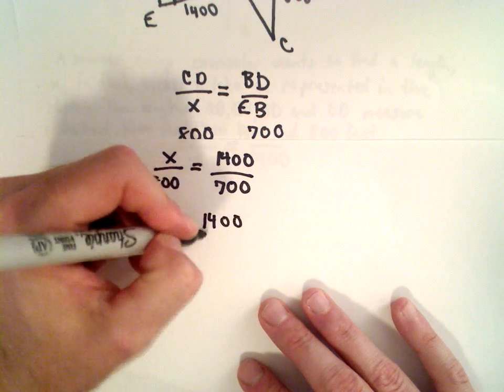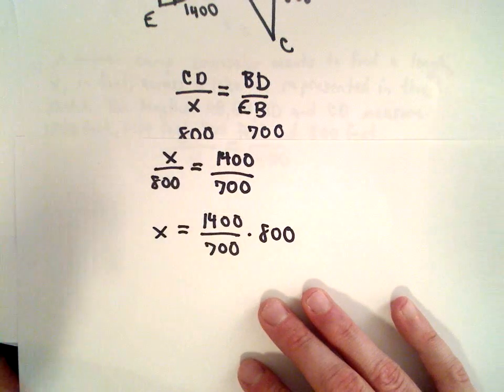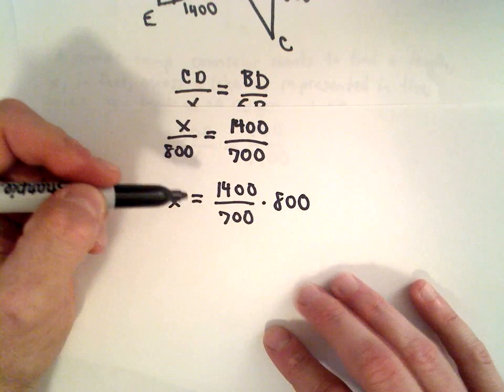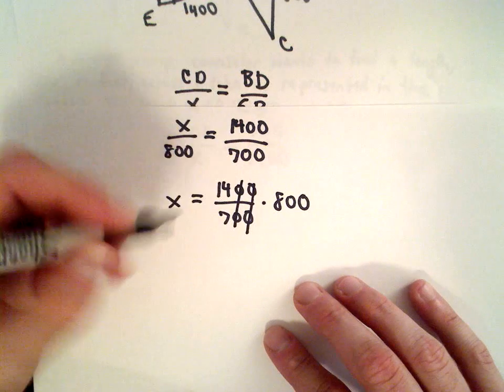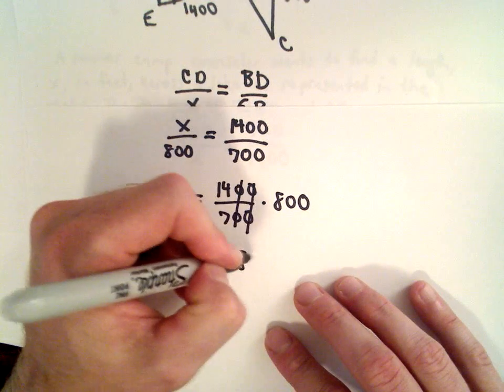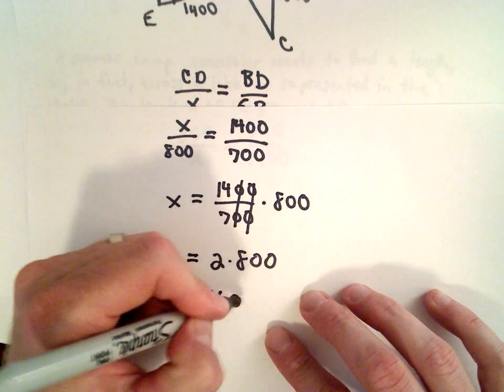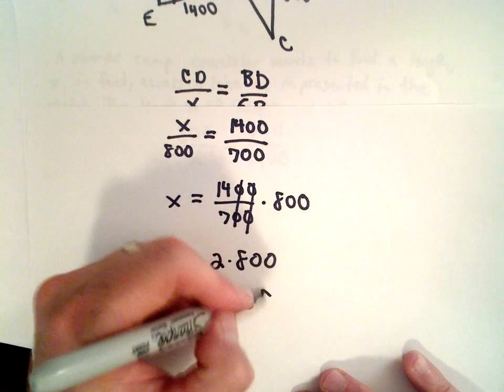So we'll have 1400 over 700 multiplied by 800. Well, 1400 divided by 700, we can cancel out the zeros. 14 divided by 7 is 2, so we have 2 multiplied by 800, and that's going to give us a length of 1600 feet.